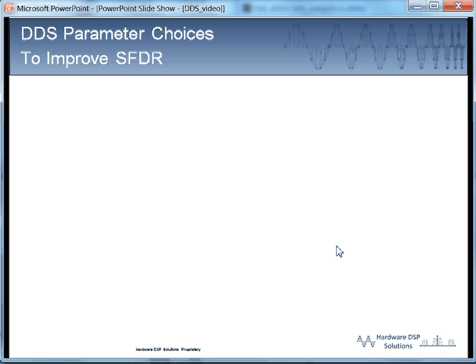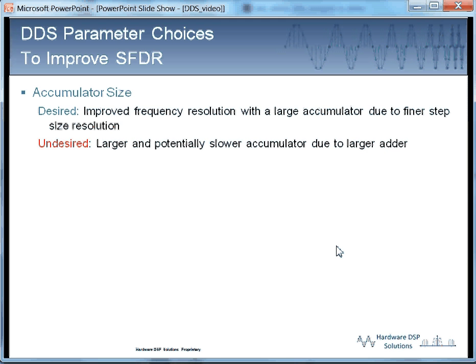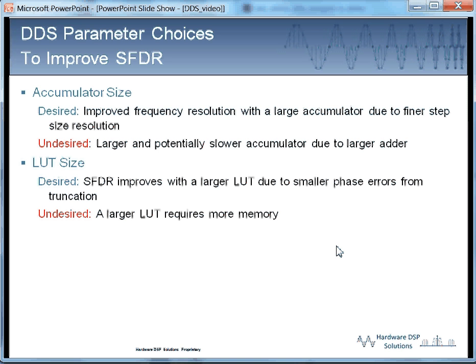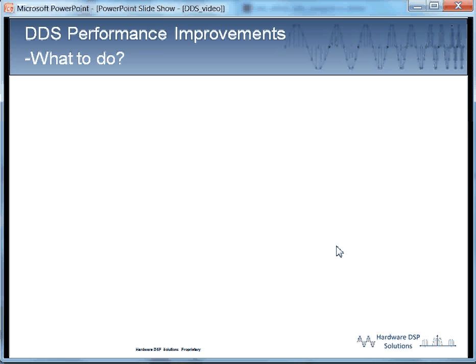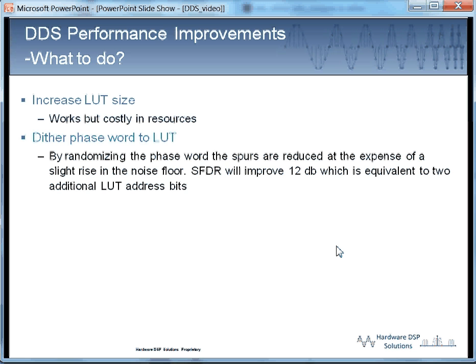So, how do we improve our DDS performance? We have lots of choices. The accumulator size can be twiddled with. The bigger accumulator, as we saw, increases the frequency resolution, but then large accumulators mean large adders. The LUT size, the lookup table size, can be made larger, but then that equates to more memory. And we can also increase the output bit width, but to some point, that also increases our memory requirement. Increasing LUT size will work, but it's costly. But there's another choice.